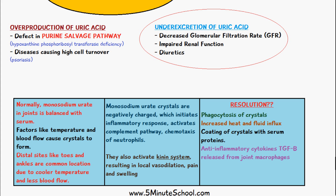Gout usually resolves on its own through the phagocytosis and breakdown of the crystals. Although the inflammatory response is painful, the resulting increase in heat and fluid influx helps to break down the crystals. Once there is this fluid influx, the crystals get coated with positively charged serum proteins, which reduces the inflammatory response they can cause. Additionally, anti-inflammatory cytokines like transforming growth factor beta are released from macrophages present in the joints, further reducing inflammation until the crystals are fully degraded.